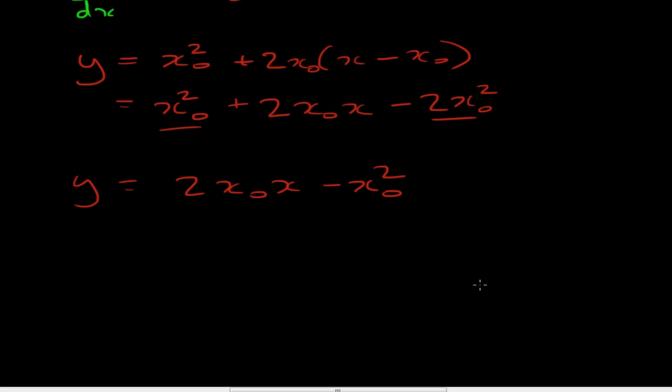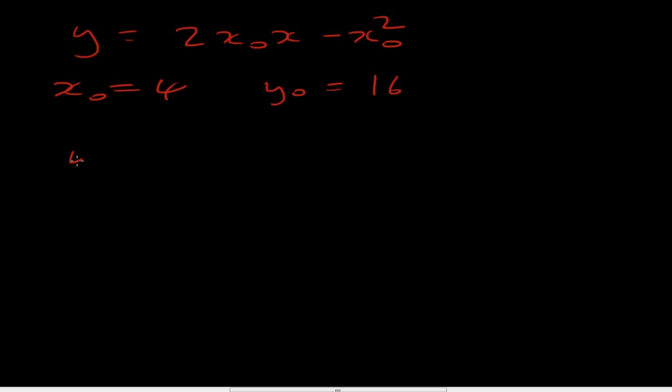How about doing a particular example? Let's say my operating point x0 is 4. At x0 equals 4, I know that y0 is 16, because 4 times 4 is 16. So let's insert x0 into our tangent equation. So I get y equals 2 times 4 times x minus 4 times 4 is 16. So that gives me 8x minus 16. That's our line.